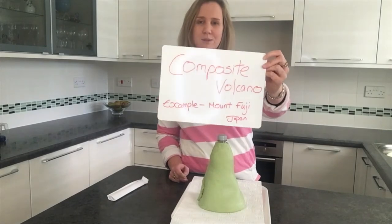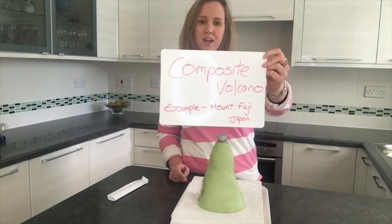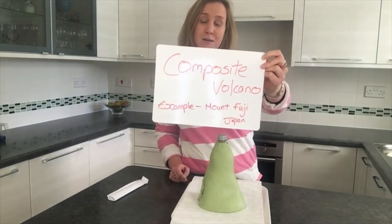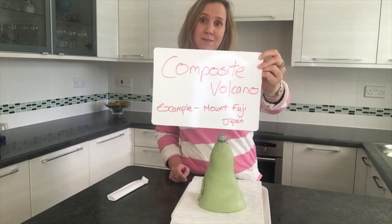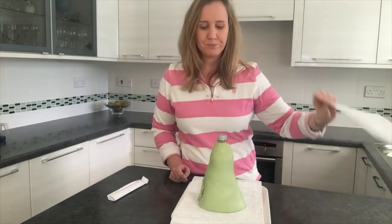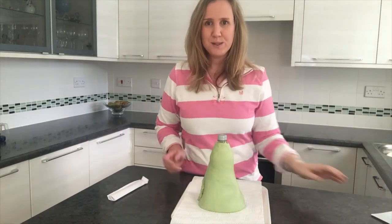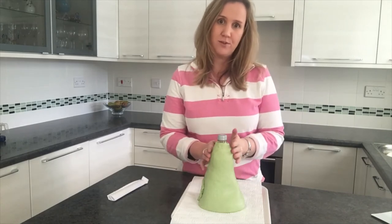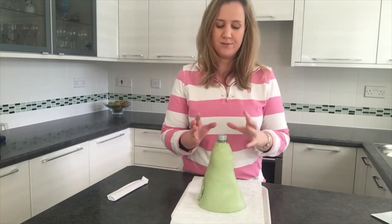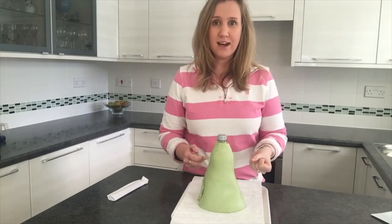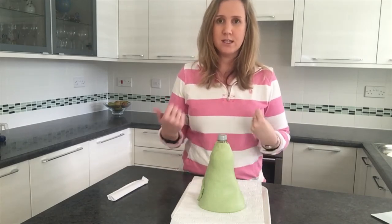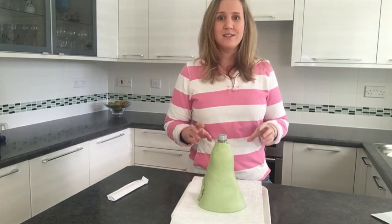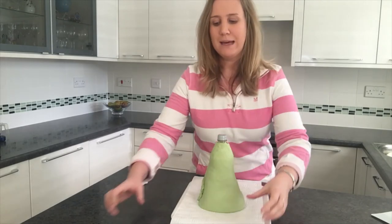Now we're going to look at the composite volcano, also known as a stratovolcano. An example is Mount Fuji in Japan. As we can see, it's cone shaped with steep sides made up of layers of ash. These are found at destructive plate boundaries.